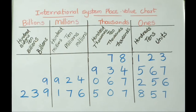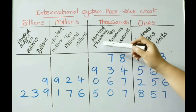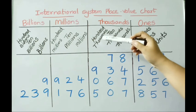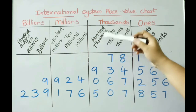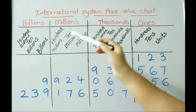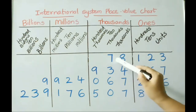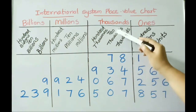If we compare the Indian place value system, instead of hundred thousands we have lakhs, ten lakhs, crore, ten crore, and so on. Now let us read numbers in the international place value system.